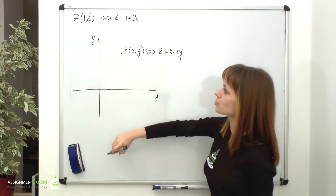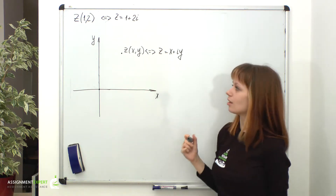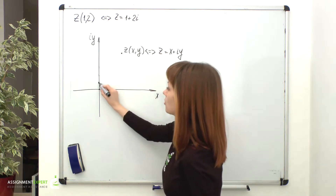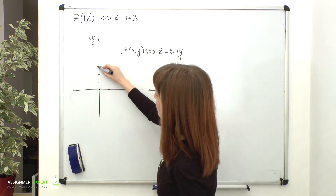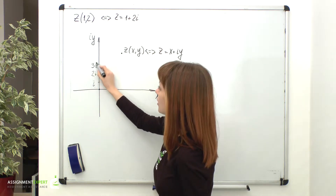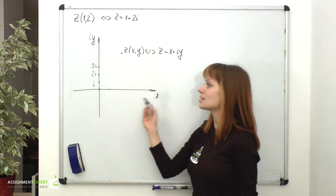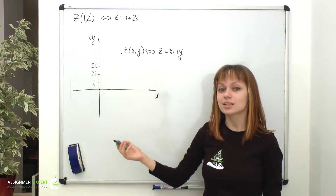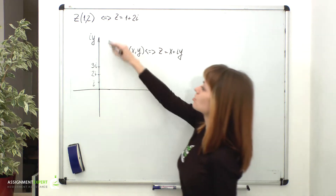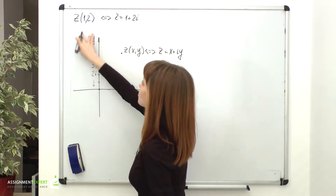We mark all the imaginary numbers on the y-axis, therefore called the axis of imaginary numbers. In fact, we could have noted it as iy, as well as all the numbers along this axis: i, 2i, 3i, and so on. But as I've said, i is only a sign telling us that the number standing next to it is imaginary. So let's agree the y-axis is the axis of imaginary numbers, and there is no need to mark all numbers along this axis with i.